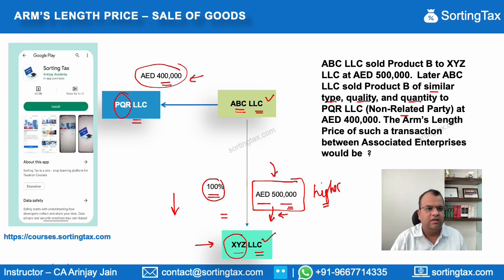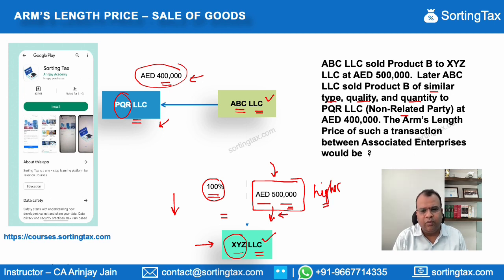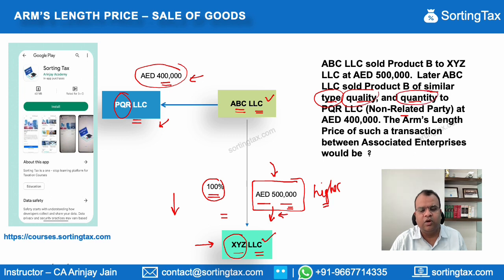When you compare the prices, the cost for the unrelated party is lower. One important thing to note is that the goods must be of similar type, similar quality, and similar quantity — and in this example, those aspects are given as the same.